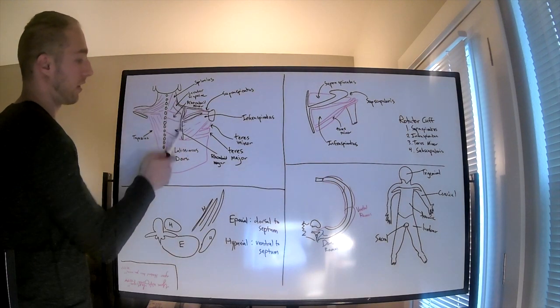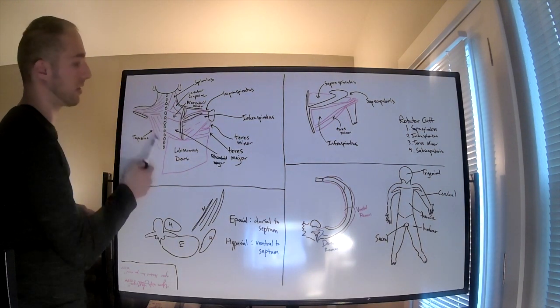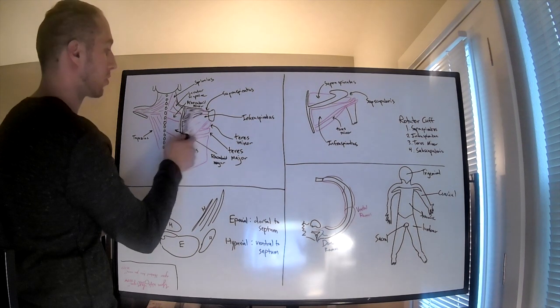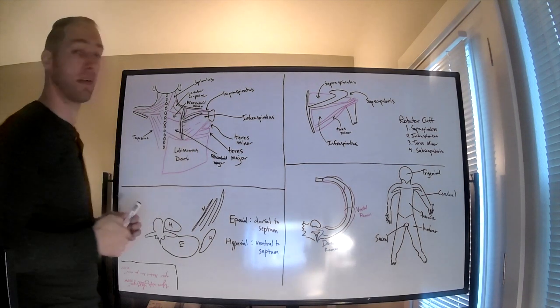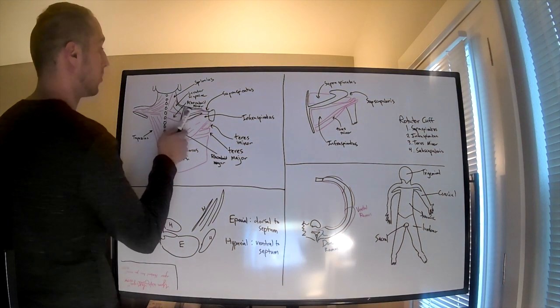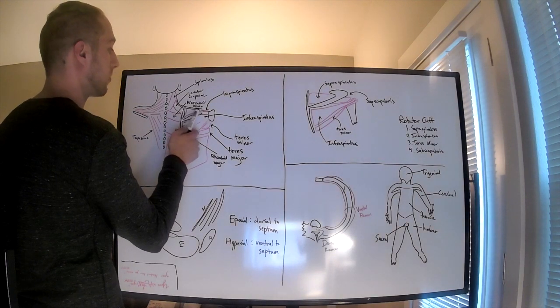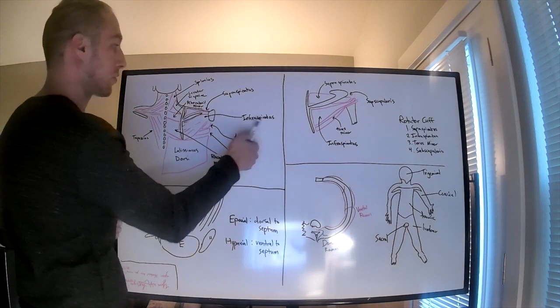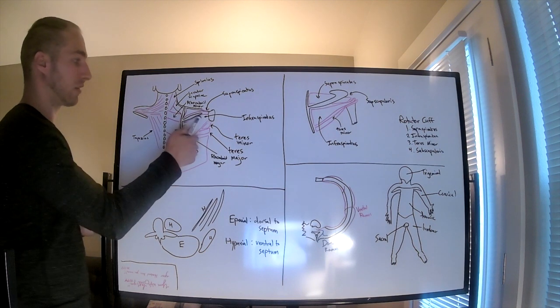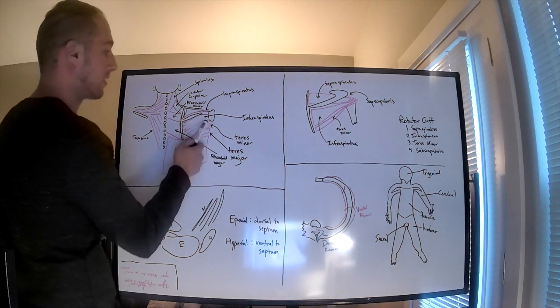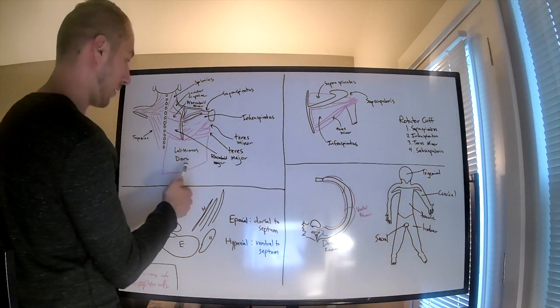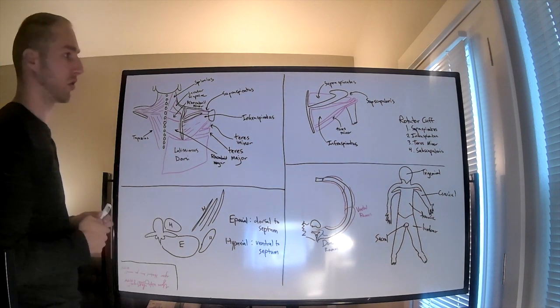The spine of the scapula right here - this is the scapula and this is the spine. The supraspinatus is above the scapula, so it sits in the supraspinous fossa. The infraspinatus sits in the infraspinous fossa. Then you have the teres minor and teres major and the latissimus dorsi.